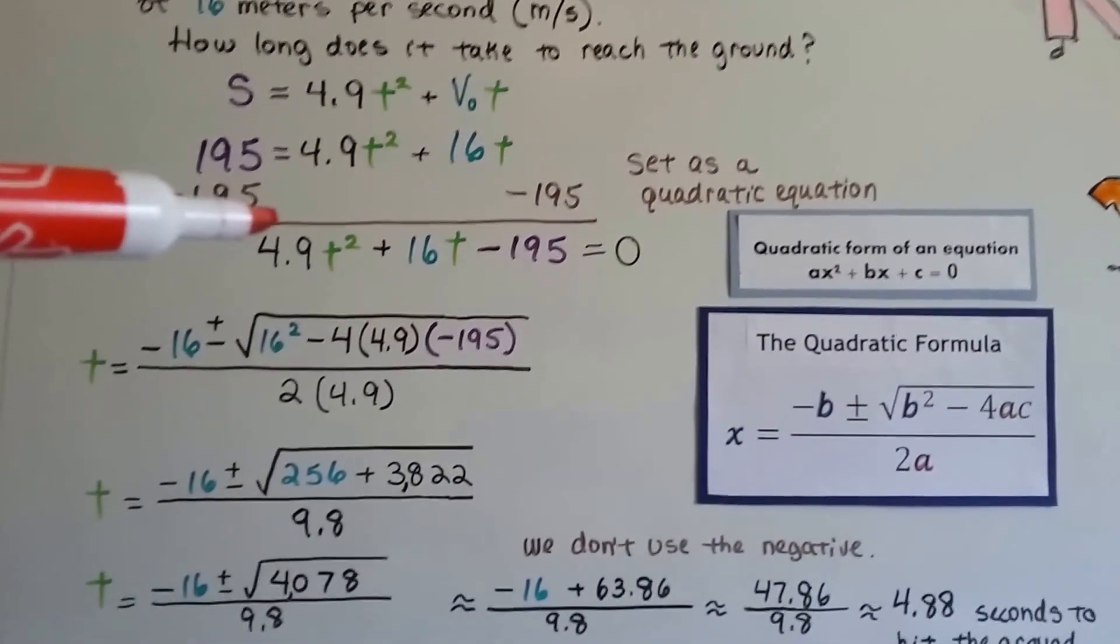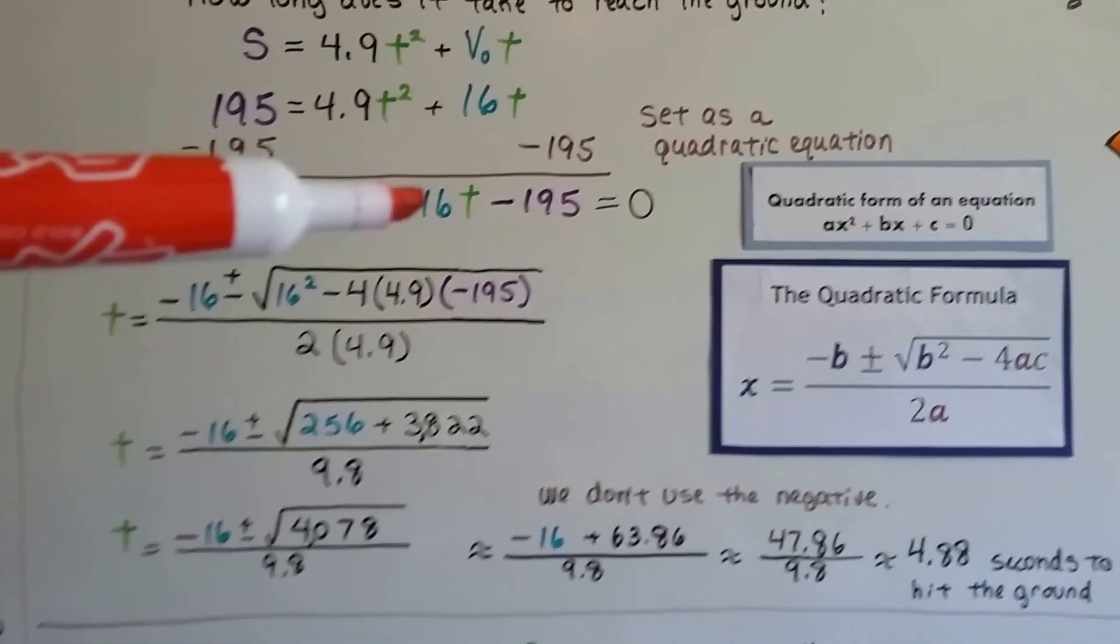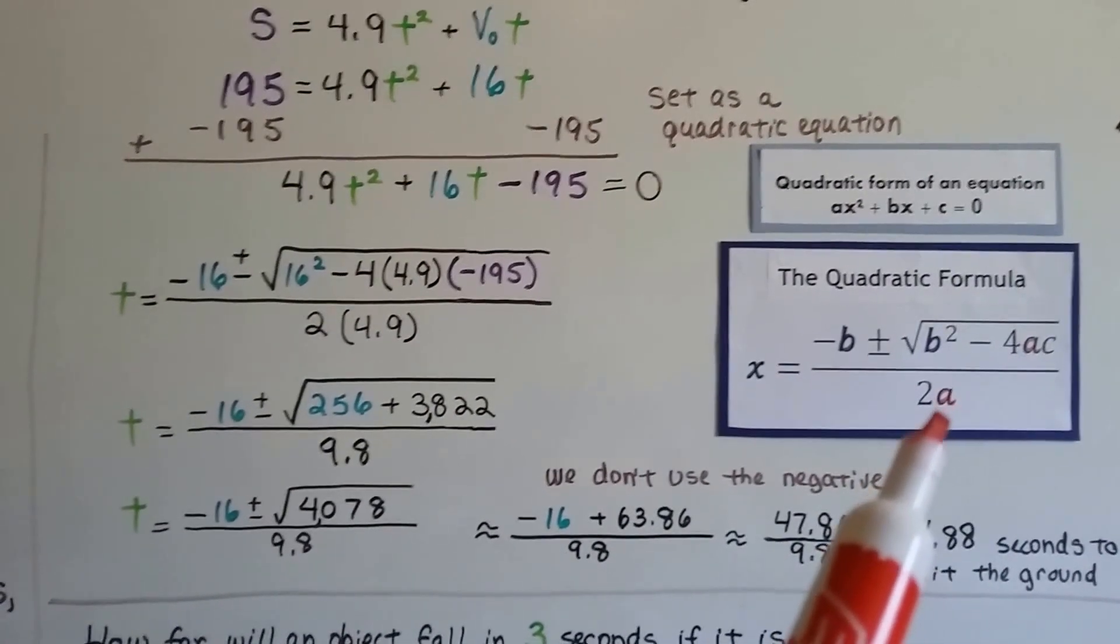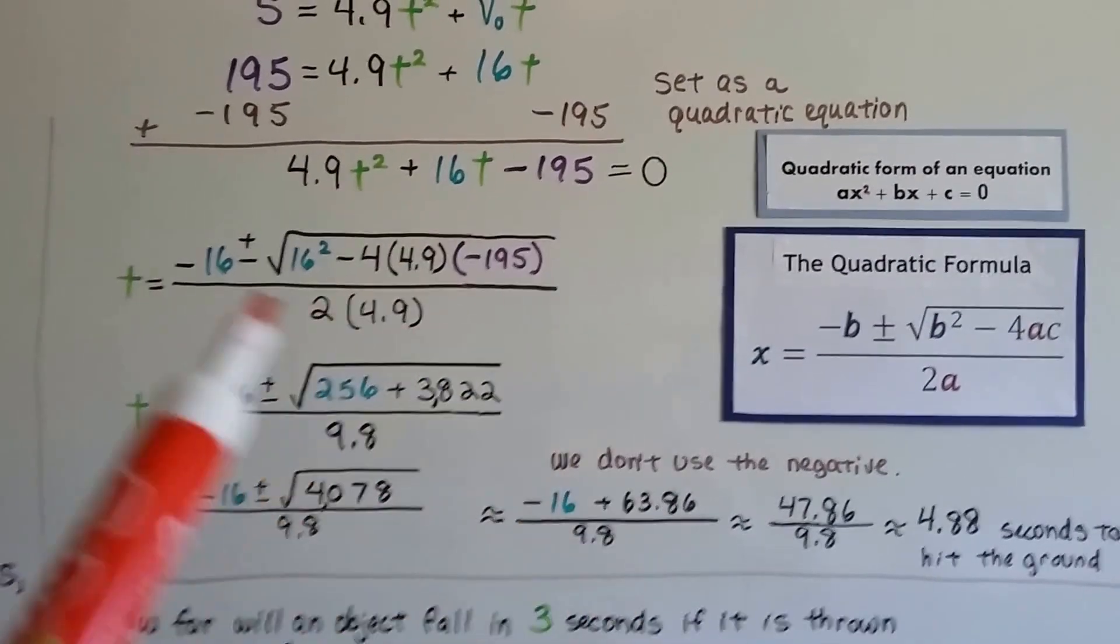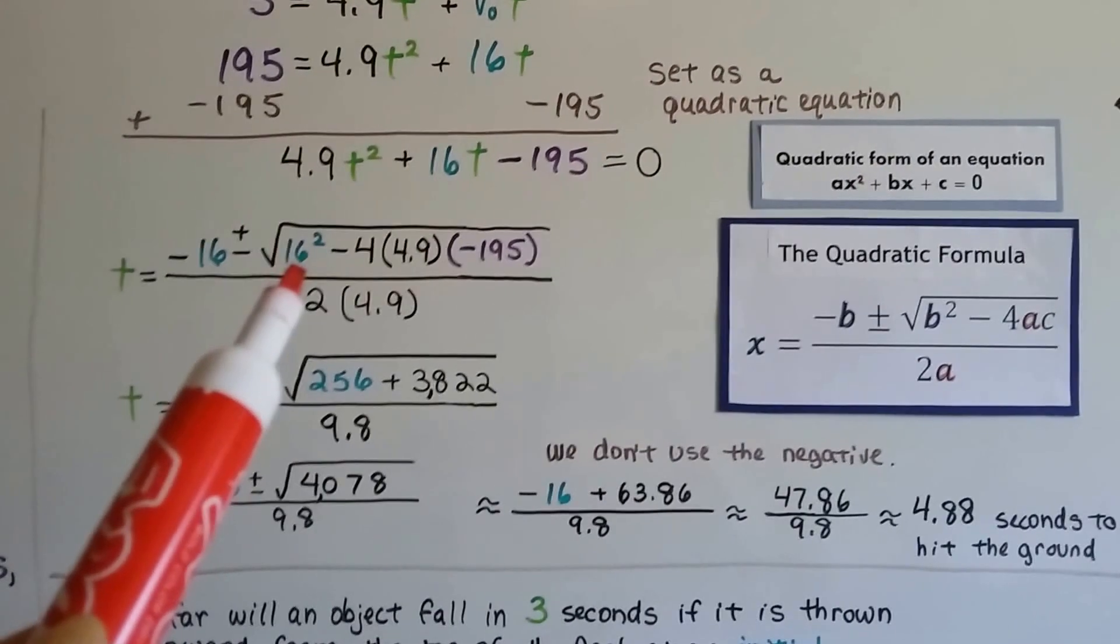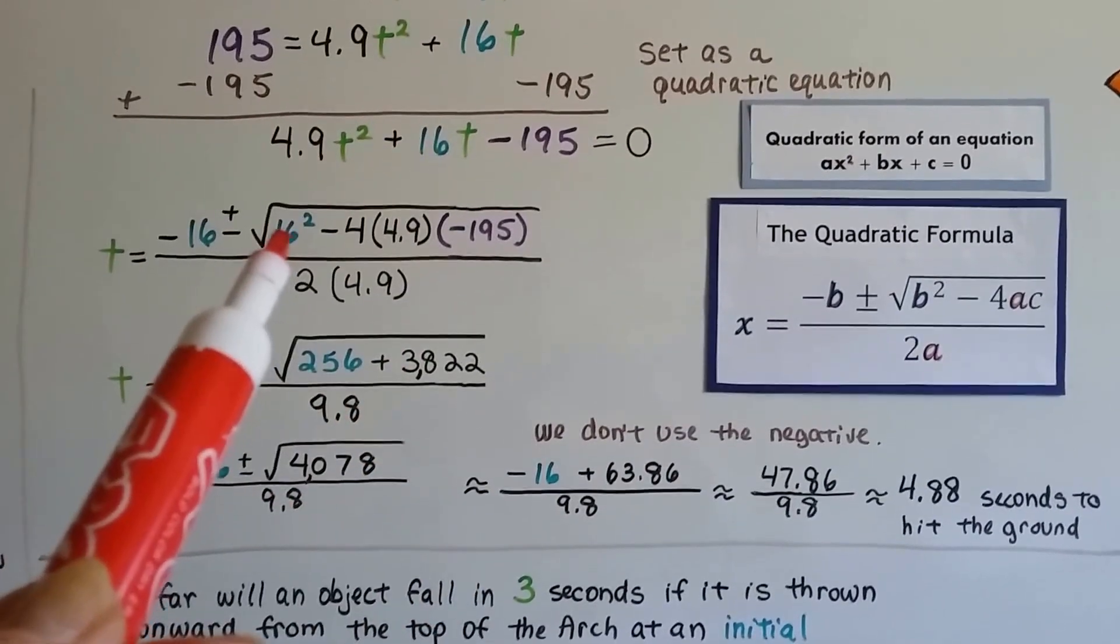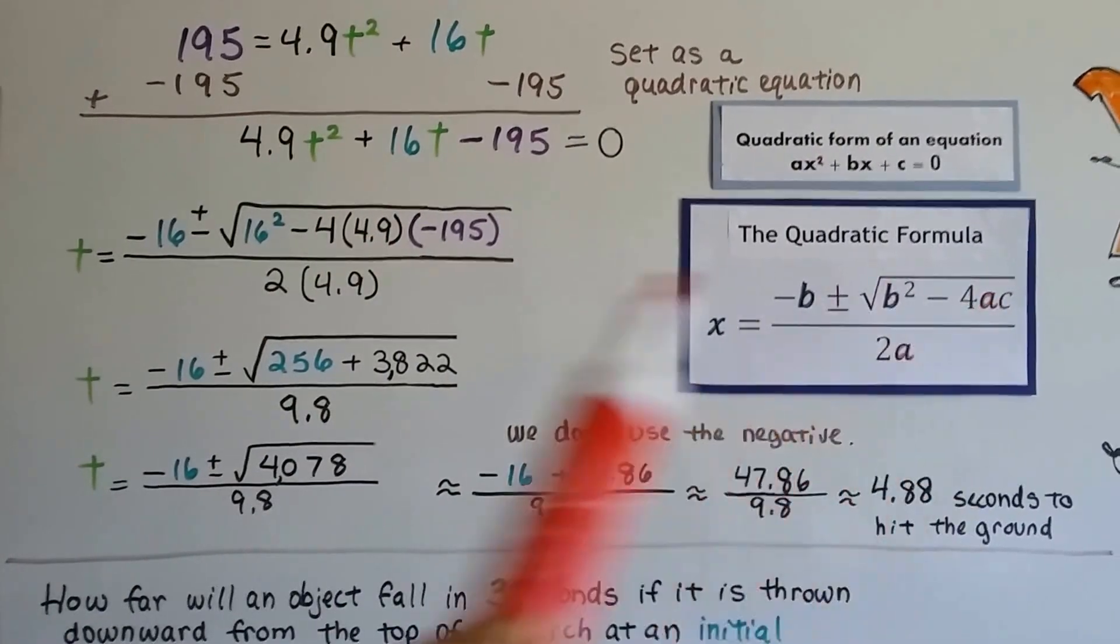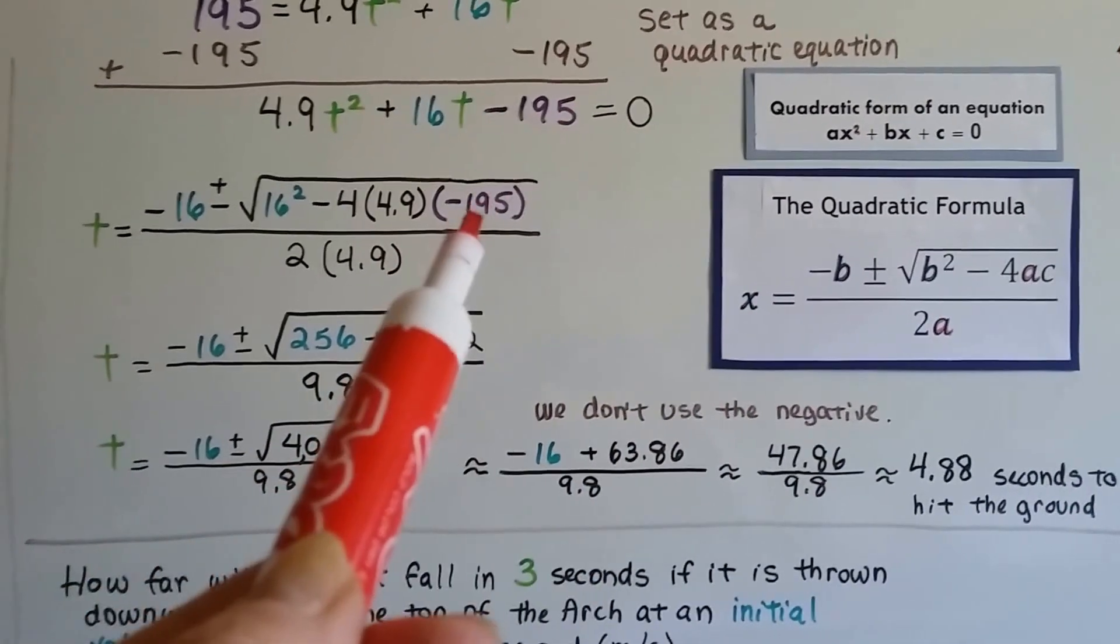Now we can take these values and substitute them into the quadratic formula. So that's a, that's b, and that's our constant c. So a is going to come down here. This 4.9 is going to be multiplied by the 2. And b is our 16. So we're going to have the inverse of b, which is a negative 16 plus or minus the square root of b squared, which would be 16 squared minus 4 times a, which is our 4.9 again, times this c value, this negative 195.